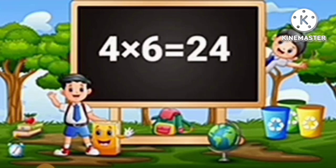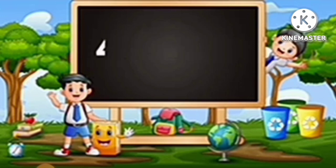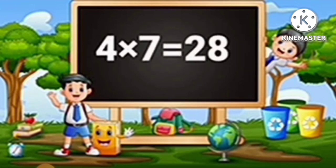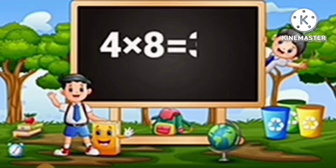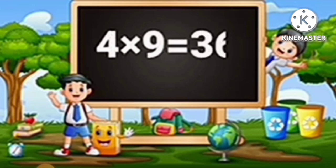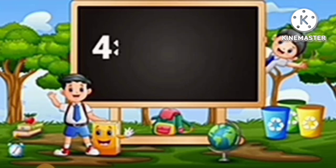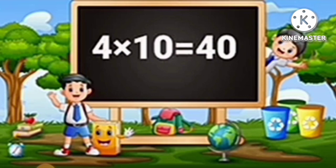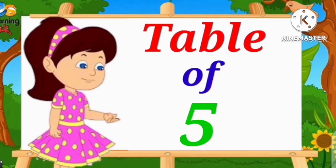4 sixes are 24, 4 sevens are 28, 4 eights are 32, 4 nines are 36, 4 tens are 40.